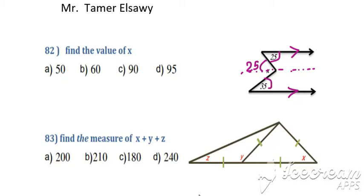35. This area, this angle is 35. So we can add 25 plus 35 is 60. This is very easy, just we know the idea.